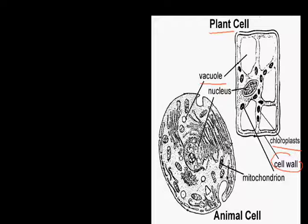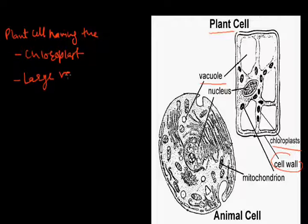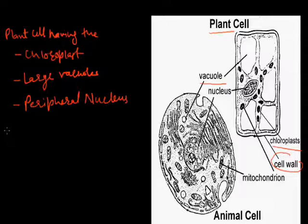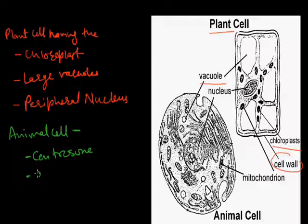In the case of the animal cell, the nucleus is in the center. The differences: the plant cell has chloroplasts, large vacuoles, and a peripheral nucleus. The unique features of the animal cell include centrioles for cell division and small-sized vacuoles.